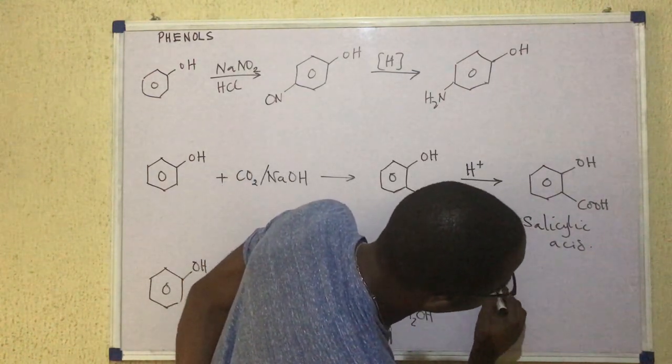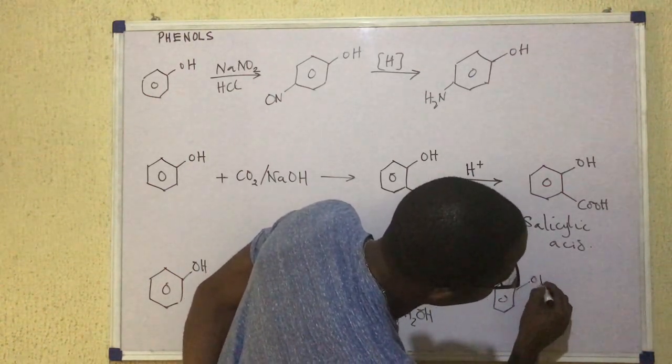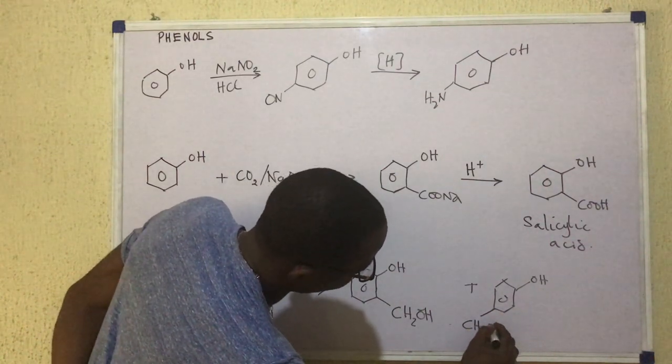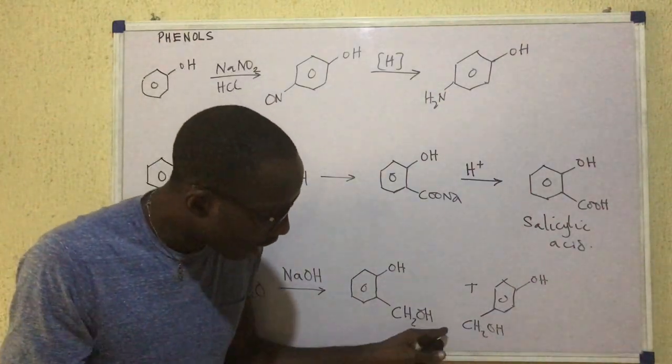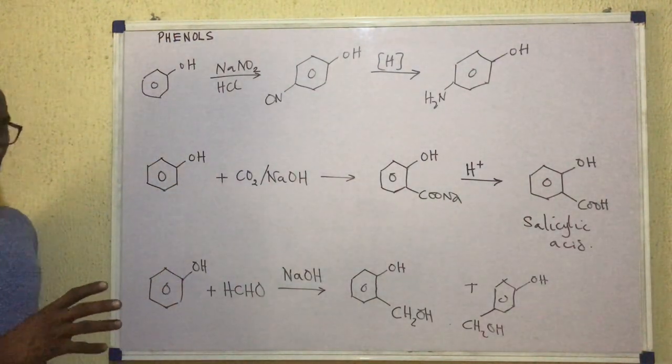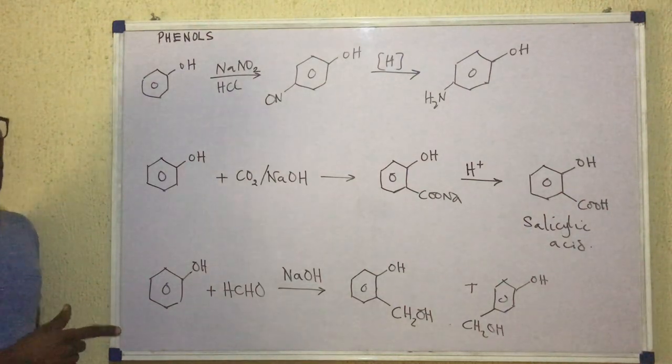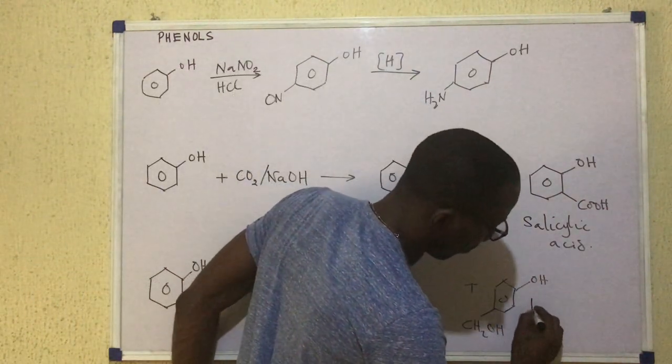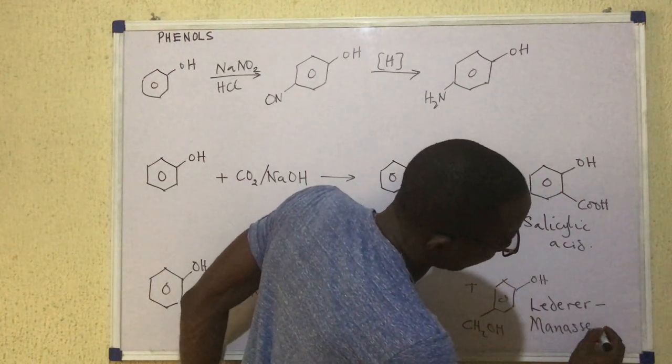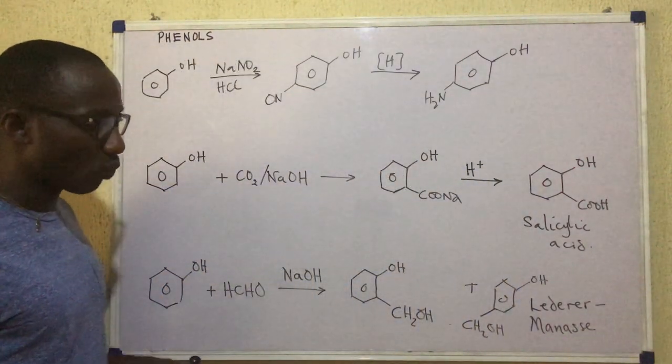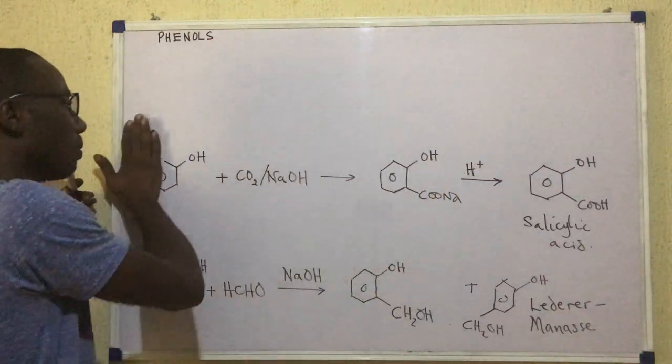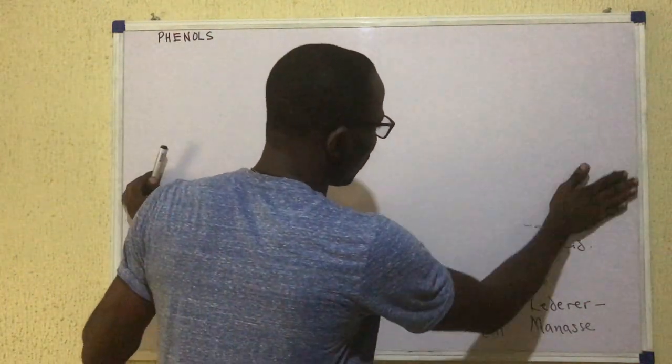Then the second product is drawn as this. We still have the OH there. This time around we have CH2OH. So we have these two products. Again, ortho and para. And this reaction, though not very popular, is called the Lederer-Manasse reaction. So the Lederer-Manasse reaction is what we are seeing there as one of the reactions of phenol. So when phenol reacts with methanal in presence of sodium hydroxide, we get two products, not one.